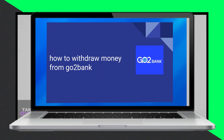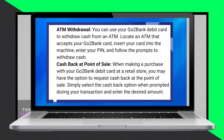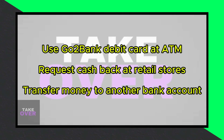Withdrawing money from GoToBank is simple. Here's how to use your GoToBank debit card to withdraw cash from an ATM. Locate an ATM that accepts your GoToBank card, insert your card, enter your PIN, and follow the prompts to withdraw cash.